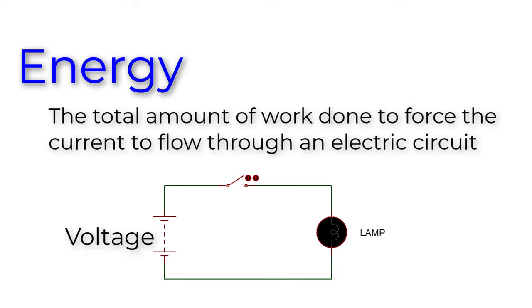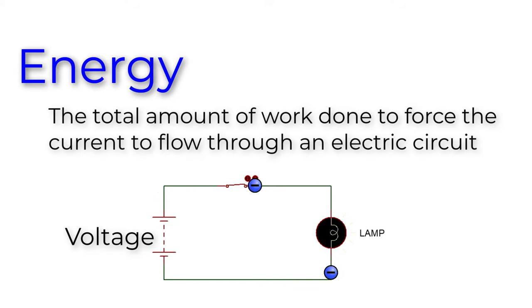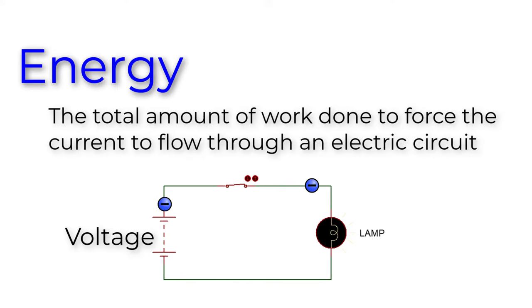In this example, if we turn on the switch, the potential difference in this closed loop will cause current to flow through the circuit. The amount of work that is done in this circuit is energy.